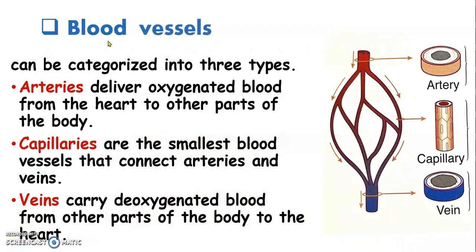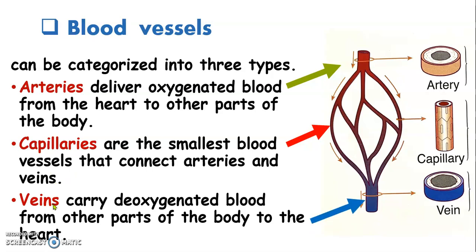Blood vessels can be categorized into three types. Arteries deliver oxygenated blood from the heart to other parts of the body. Capillaries are the smallest blood vessels that connect arteries and veins. Veins carry the oxygenated blood from other parts of the body to the heart.